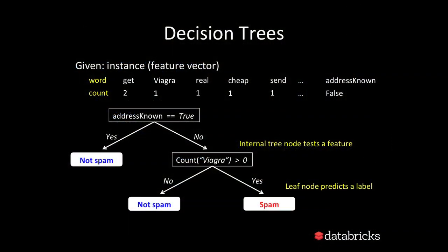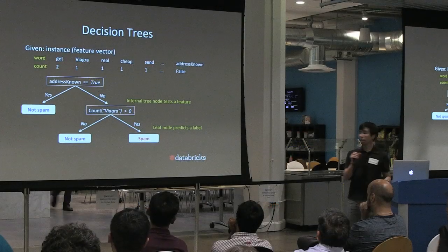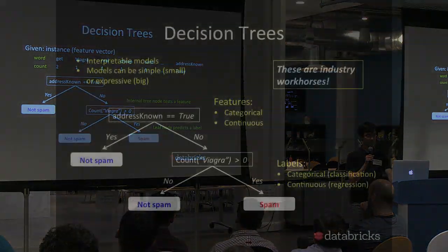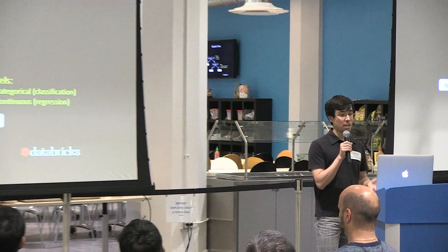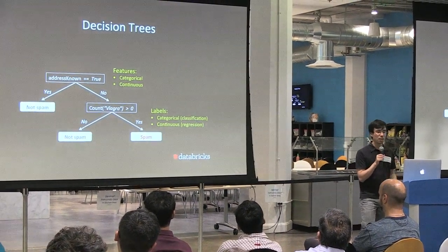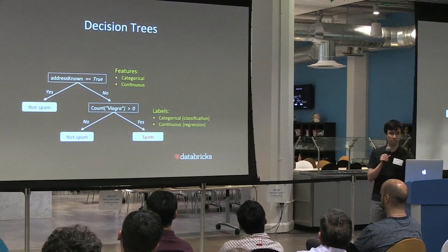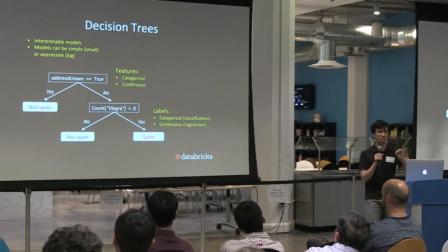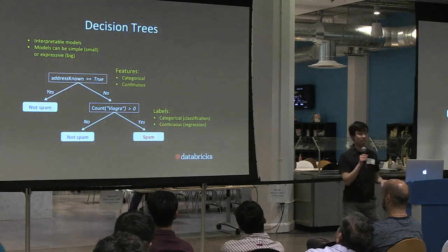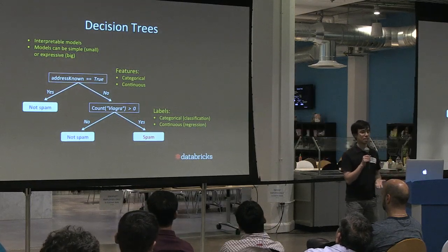The internal tree nodes test a single feature value, while the bottom-most leaf nodes predict labels. This simple example illustrates the power of these models. They can handle different types of features — here we have a categorical feature (address known, two values) and continuous features (word counts). They can handle different label types: here we have two categories, making it a classification problem, but you can also predict continuous values, which is regression. Decision trees are interpretable — you can trace down the tree and see the exact process leading to a prediction. Models are flexible: small trees are simple; big trees are expressive and powerful.